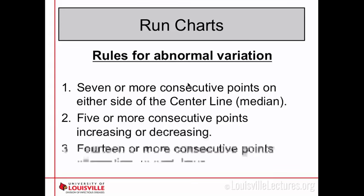You can identify abnormal variation in a few different ways. One way is if there are seven or more consecutive points on either side of the center line — if you are going above or below your median for seven months in a row, that's abnormal. Mathematically, you'd expect 50% of your cases above and 50% below the median, so having seven in a row is a very small mathematical probability.